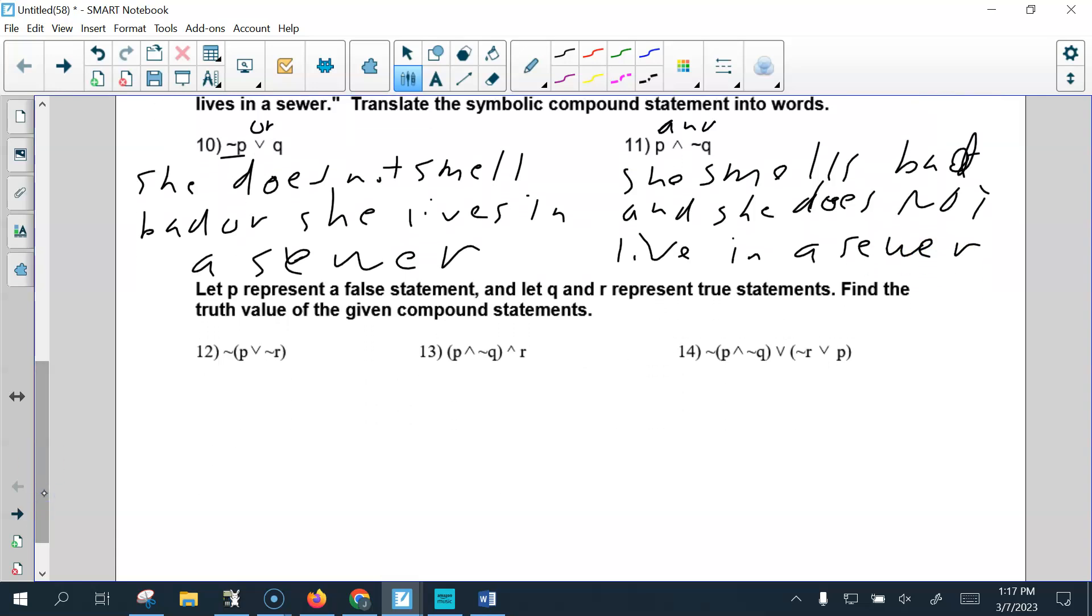Alright. Let P represent a false statement, and Q represent truth. So P is false, and Q is true. So we say not P, which is true, or not R. Oh, sorry. R is also true. If you want to take the time here to write not true, you can. If you want to change that right away to false, that's fine. And I'm sorry, P is a false statement. So I'm messing up all over the place. So P is false. And then Q and R are true.